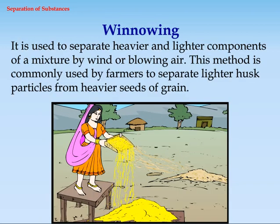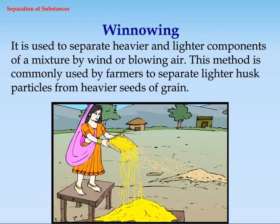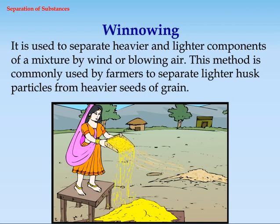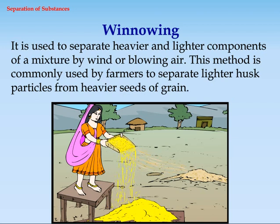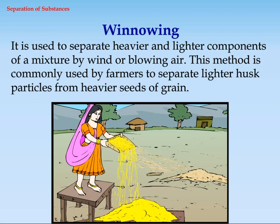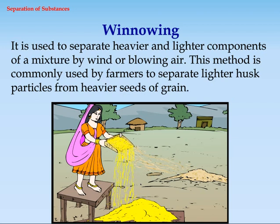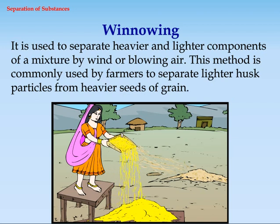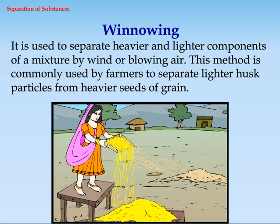Winnowing. It is used to separate heavier and lighter components of a mixture by wind or blowing air. This method is commonly used by farmers to separate lighter husk particles from heavier seeds of grain.